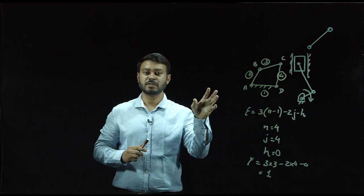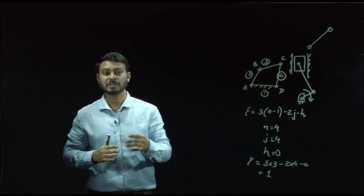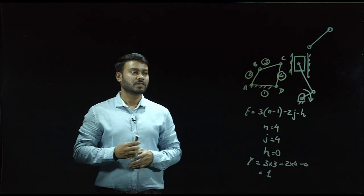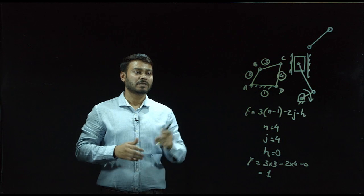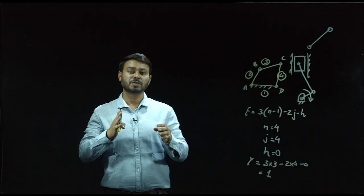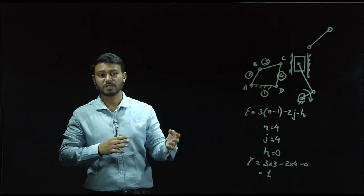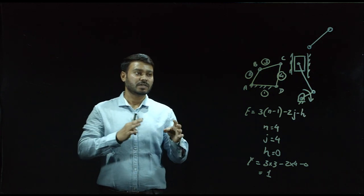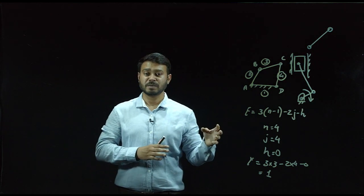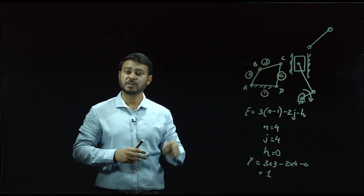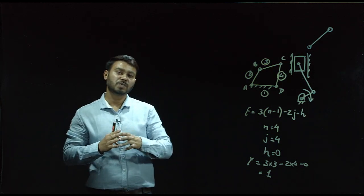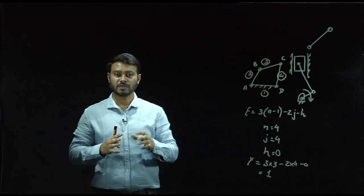From the 4-bar chain, we can form three different mechanisms: the first is the beam engine, the second is the coupling rod of a locomotive, and the third is the pendulum pump. In the beam mechanism, rotary motion is converted into reciprocating motion, used in rotary compressors. In the coupling rod of a locomotive, used in railway engines, rotary motion is converted into rotary motion — in this case the length of the input link and output link must be the same.